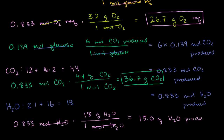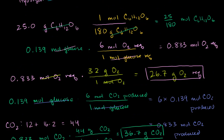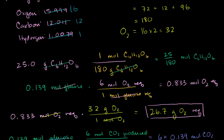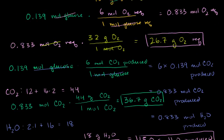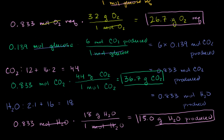And we're done! Starting with 25 grams of glucose, we require 26.7 grams of oxygen to react with it, and we produce 36.7 grams of carbon dioxide and 15.0 grams of water.